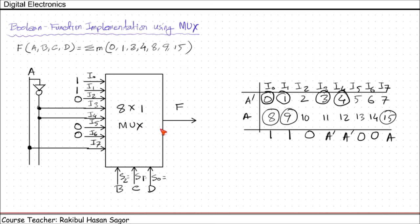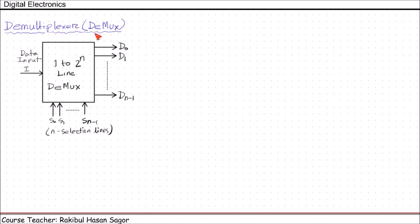Demultiplexer, or DEMUX in short form. A demultiplexer basically reverses the multiplexing function — it takes digital information from one line and distributes it to a given number of output lines. Using n selection lines, we can have a maximum of 2 to the power n output lines.